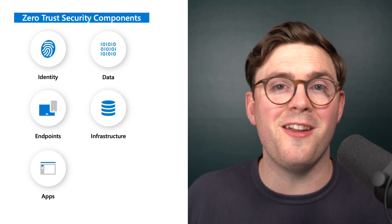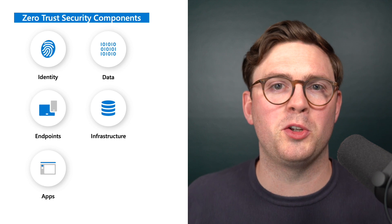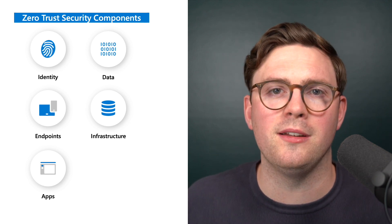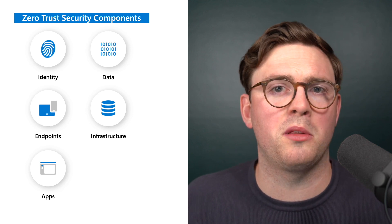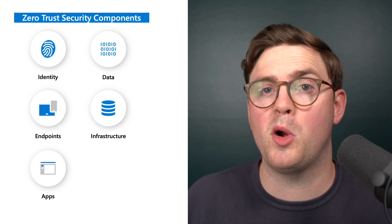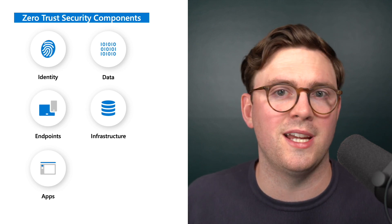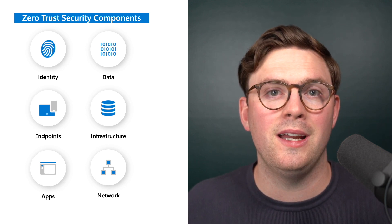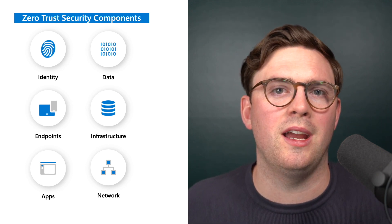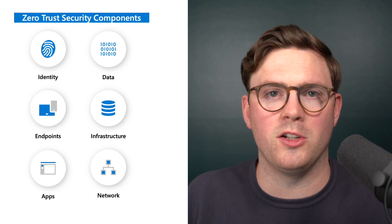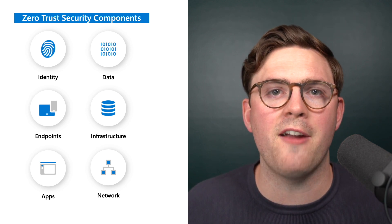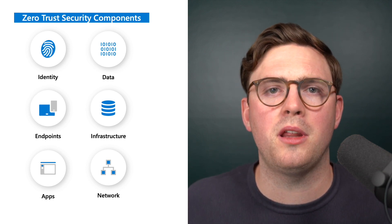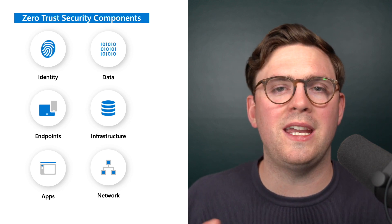Fifth, we have infrastructure, where we need to ensure people use least privileged access, while also detecting anomalies and trends so we can proactively protect our infrastructure from attacks. Finally, we have our network — in this Zero Trust model, we don't automatically allow access just because you're within our internal network. We need to ensure everything is properly trusted, from users to devices, and that we're properly segmenting our environment. Those are our six key components.